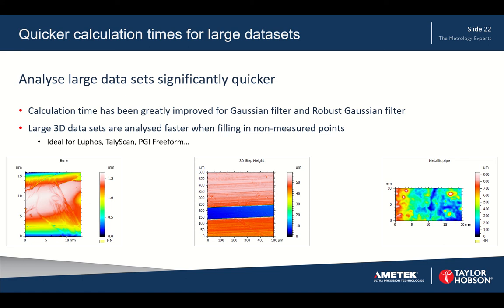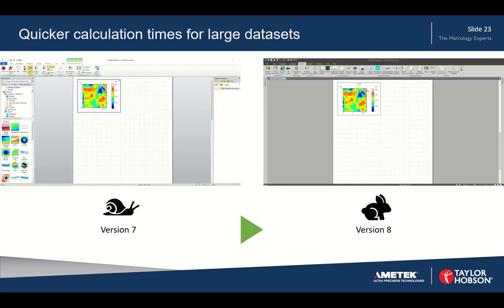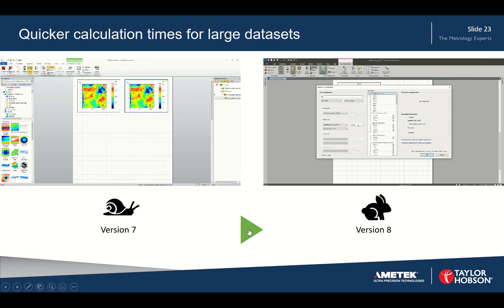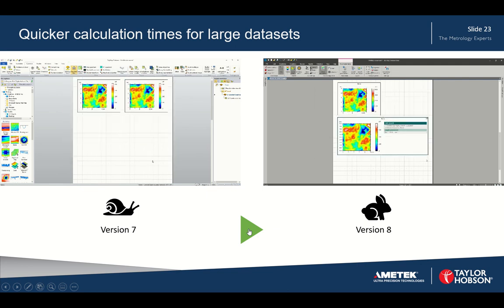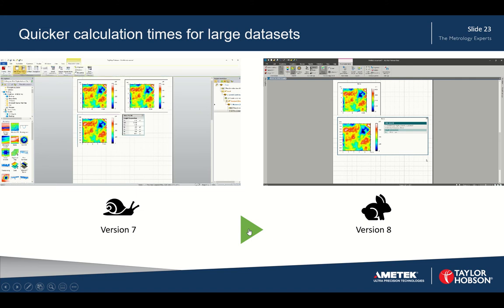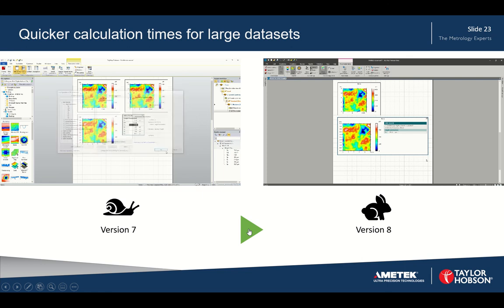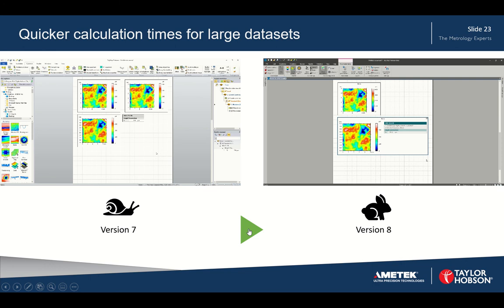For large 3D data sets, we can now analyze quicker. The Gaussian and robust Gaussian filter has been greatly improved, which means data sets from Luft scan, Tally scan, or PGI freeform, for example, can be analyzed and results viewed faster. In the comparison video, on the right version 8 has already finished while on the left version 7 is still setting up the analysis — and version 7 also generates multiple intermediate steps displayed in the document that would need to be removed afterward.